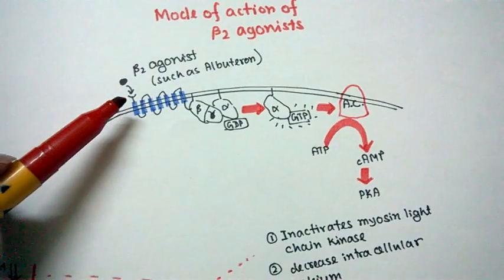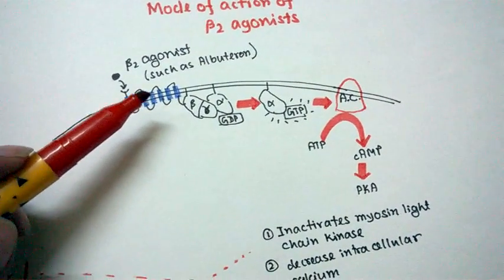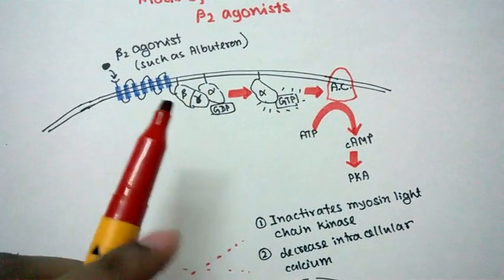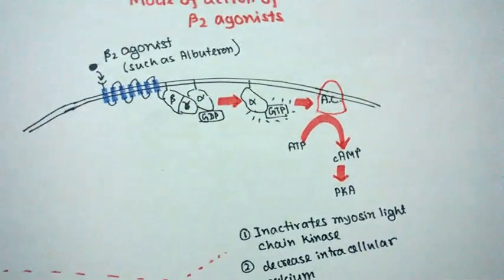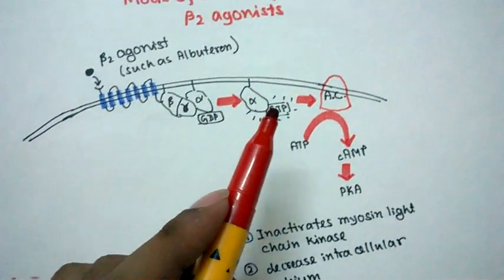When the ligand, the beta-2 agonist, binds to this G protein-coupled receptor, the membrane-bound G protein undergoes a conformational change. The GDP with the alpha subunit is hydrolyzed and exchanged with GTP.